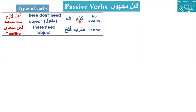Examples of lazim words: qama — he stood up, he himself stood up, nobody helped him, so there is no maf'ul and no passive voice. Similarly, karuma — he was honourable himself, so also a lazim verb with no passive voice. Mutadi words like fataha (he opened something) and daraba (he hit something) can have passive voice.